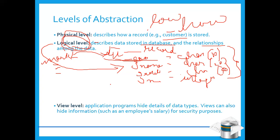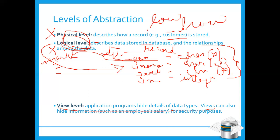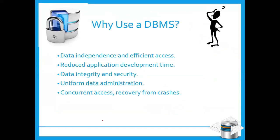The third level is the view level. The view level is what the user actually sees. The user is not bothered about how data is stored, what the data types are, or which tables are connected. The user just sees the application and whether it runs correctly or not — there's no need to see all the internal details. That is why it is called the highest level of abstraction.